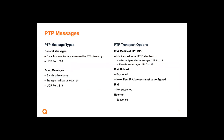PTP uses messages to exchange information, divided into two large groups: general messages and event messages. Event messages are used to synchronize clocks and carry a critical timestamp. General messages also participate in the synchronization mechanism and are used to establish the PTP network hierarchy. The distinction between general and event messages is made by the UDP port: port 319 for event messages and port 320 for general messages.